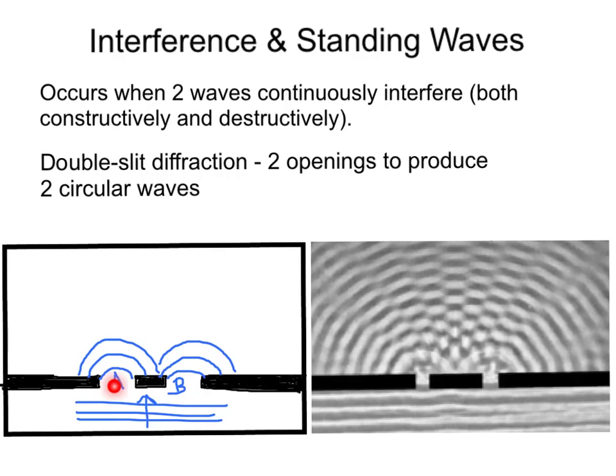As these two waves spread out through the ripple tank, it's inevitable that a crest from wave A will interfere and meet with a crest from wave B, and thus constructively interfere.